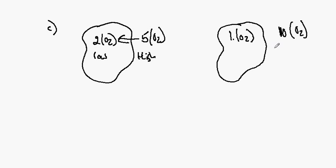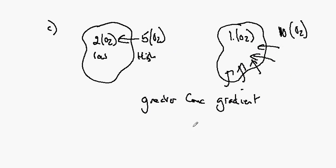Then the opportunity for oxygen to diffuse in is greater. And so this greater concentration gradient, so the greater the concentration gradient, the faster the rate of diffusion.